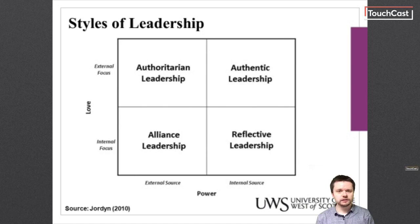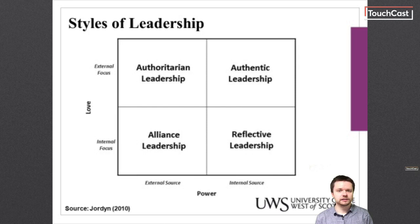Firstly, Alliance Leadership. This style of leadership is about who you know and where you work. Power comes by association with powerful people. Your boss becomes very important to you as you seek to gain what you want by pleasing the right people. Secondly, Authoritarian Leadership. This style is command and control. These leaders are very connected to their titles, office size and location, money and other symbols of power. They accomplish through others.